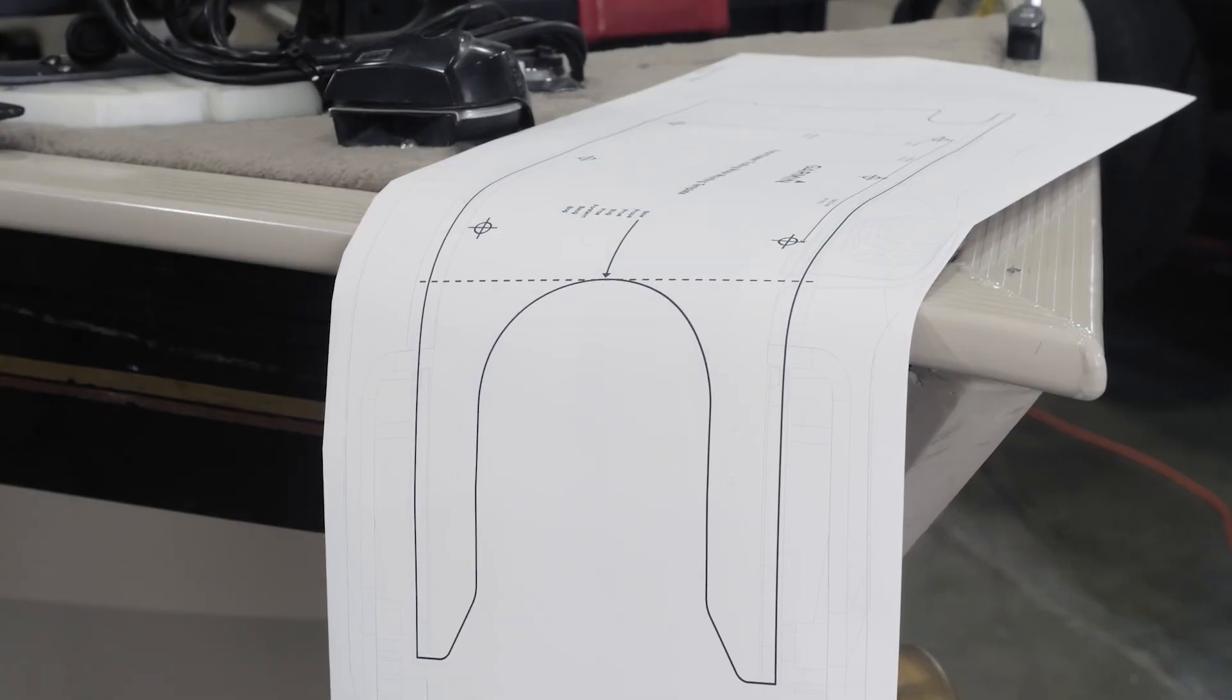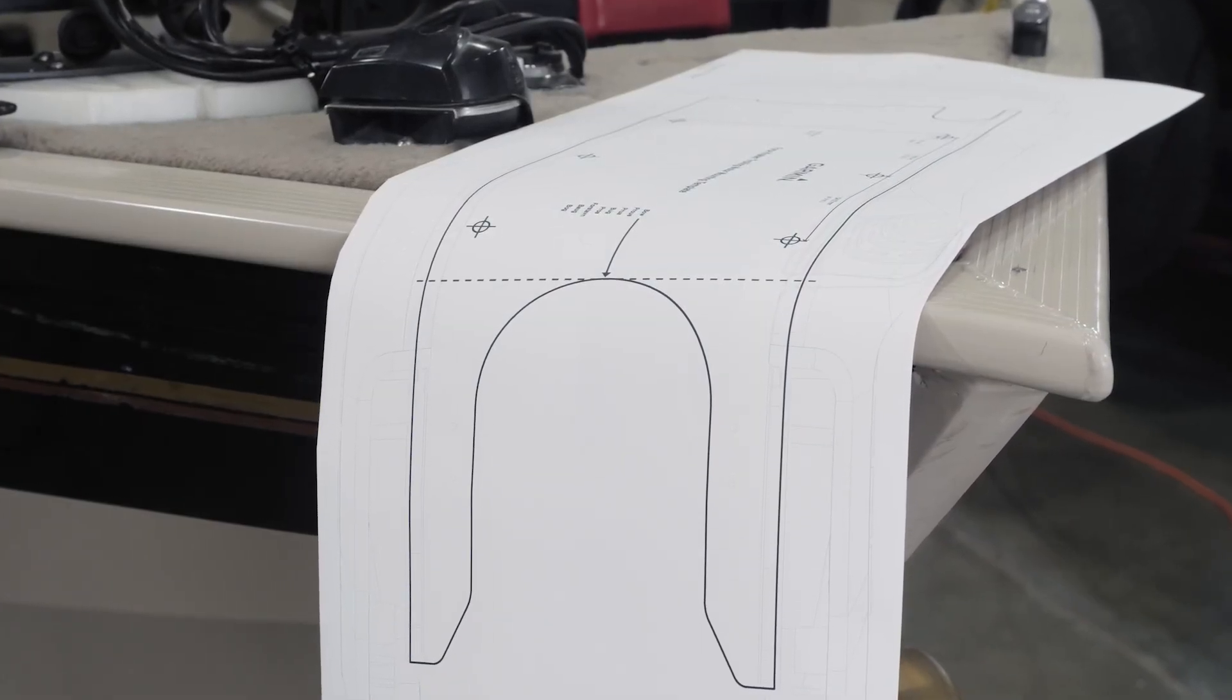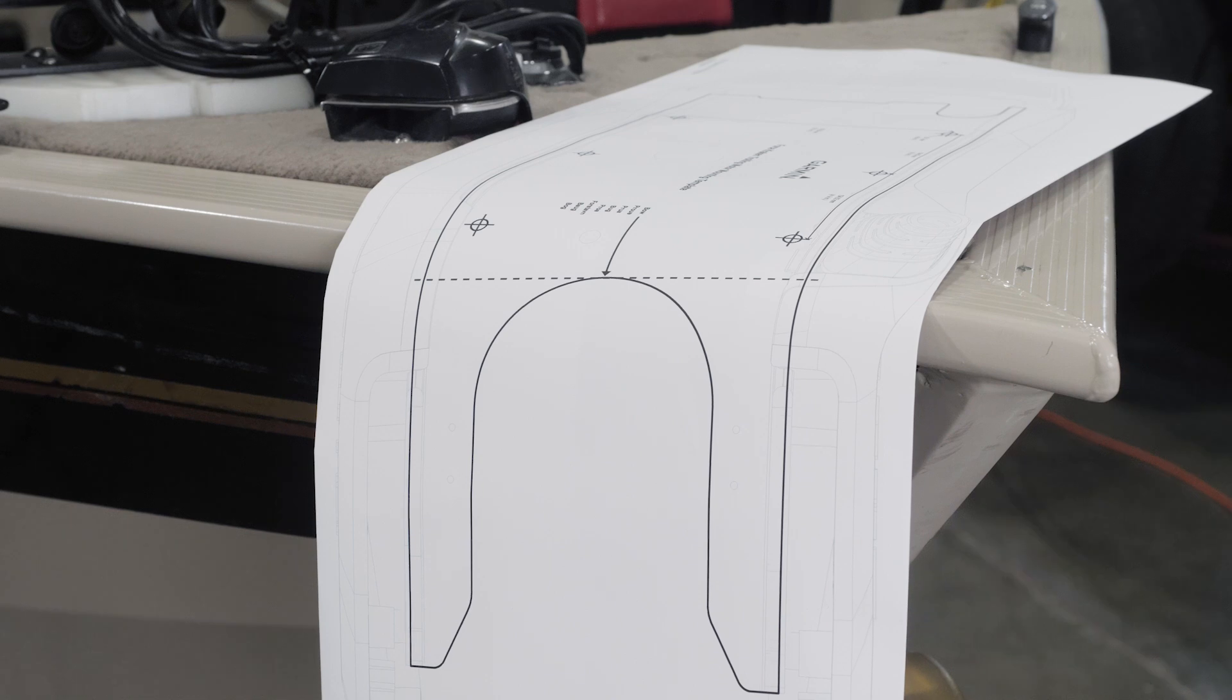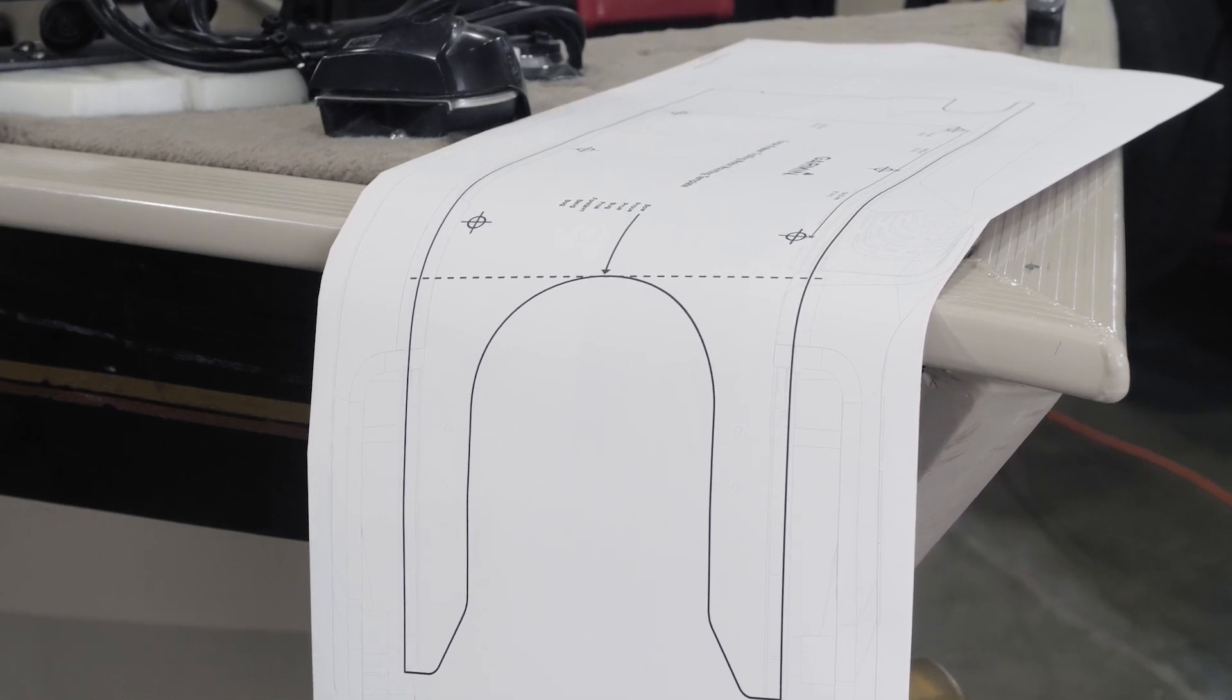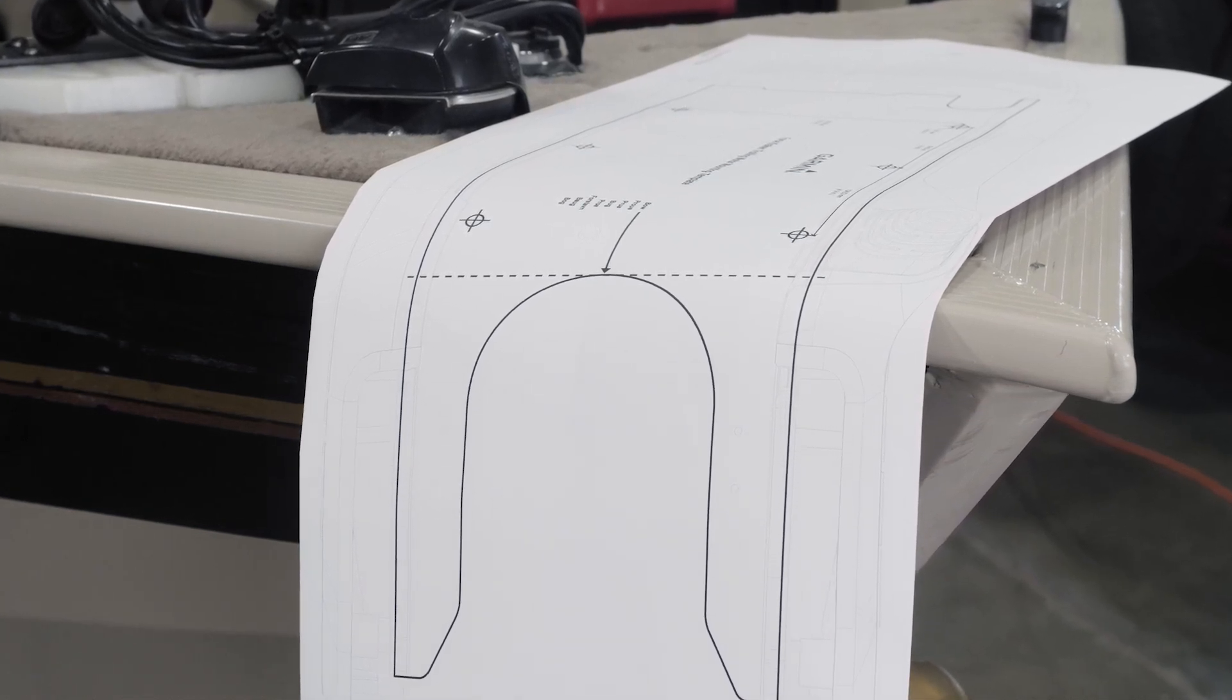All six holes will need to be used to mount the trolling motor. Follow the link in the description for guidance on approved mounting alternatives if your boat shape does not allow you to use all six holes.